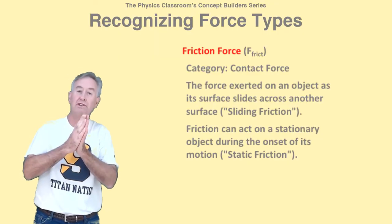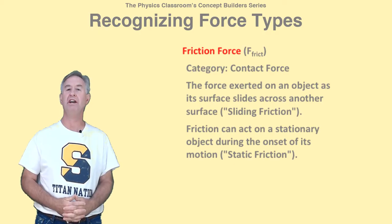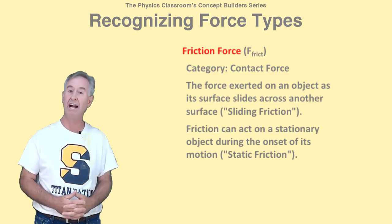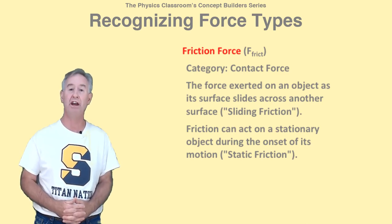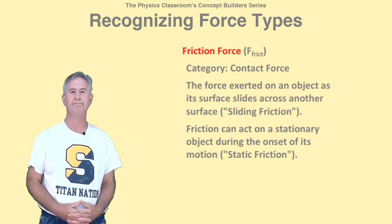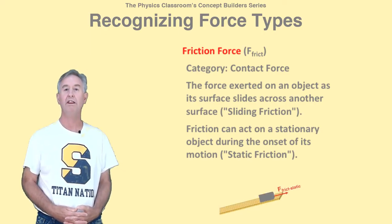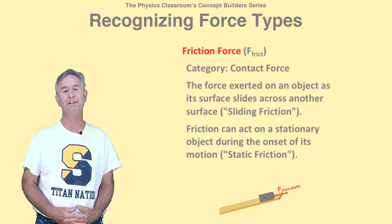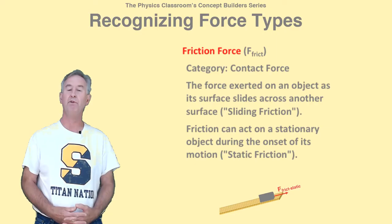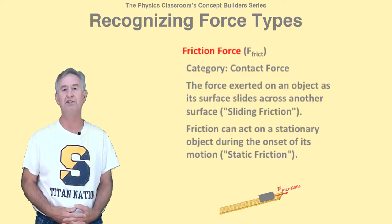Two pressed-together surfaces sliding across each other interact and pull back on each other, resulting in a type of force called sliding friction. A car skidding to a stop with locked wheels will experience sliding friction as a result of its interaction with the road surface. Friction can also occur on a stationary object that is attempting to move, like a brick at rest on a wooden board tilted at a mild angle. The force of friction on a stationary but attempting-to-move object is called static friction.